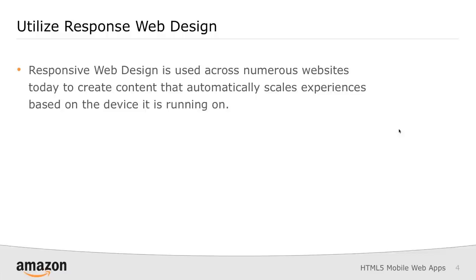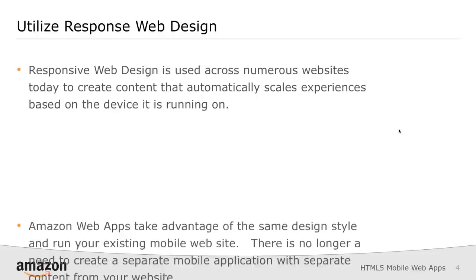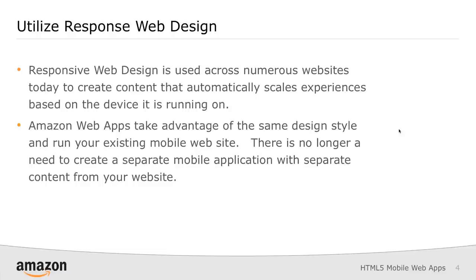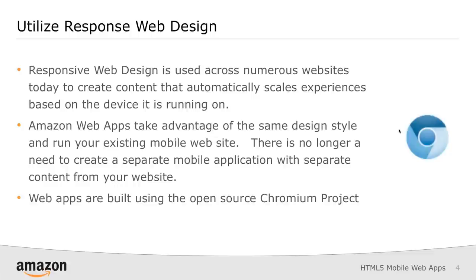This can help you solve some common concerns you might have with a website today — how are people finding you, how does it perform on a mobile device, and how will you make money. Web apps through the Amazon App Store utilize responsive web design. If you've already got a mobile website using CSS3, HTML5, and you have things set up for viewports that scale across different screens, all of that just works with web apps. Whenever you make a change to your mobile website, that change is reflected in the app instantly — there's no need to go back into the developer portal and update any code like you would for an Android app.